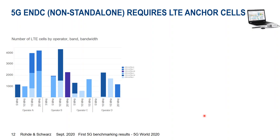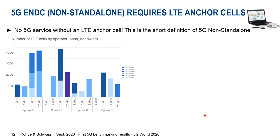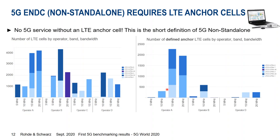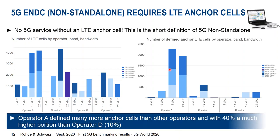Let's talk about 5G ENDC. The reason we're looking at LTE cells is simple: there is no 5G service without an LTE anchor — that is the short definition of 5G ENDC, or non-standalone mode. On the right side you can see the number of LTE cells configured as anchor cells for 5G. Operator A uses many more anchor cells — about 40% of its LTE cells are configured as 5G anchor cells. Operator D, by comparison, uses only 10% of its available LTE cells as anchor cells for 5G.